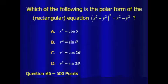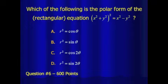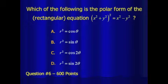Question 6, 600 points. Which of the following is the polar form of the rectangular equation we're about to give you? x squared plus y squared, that quantity squared, equals x squared minus y squared.